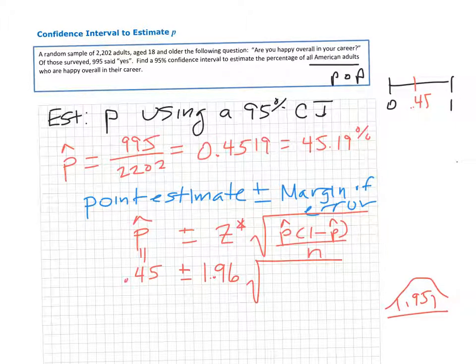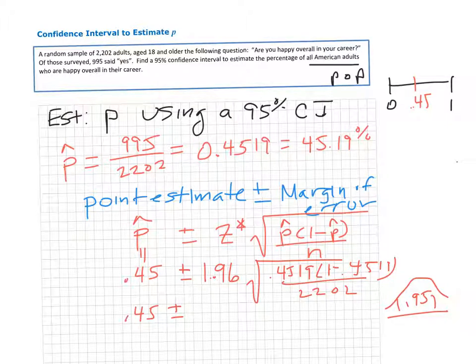Times the square root of P-hat, which is 0.4519, times 1 minus 0.4519, divided by the sample size 2202. If you work this out, the whole margin of error turns out to be 0.0208.